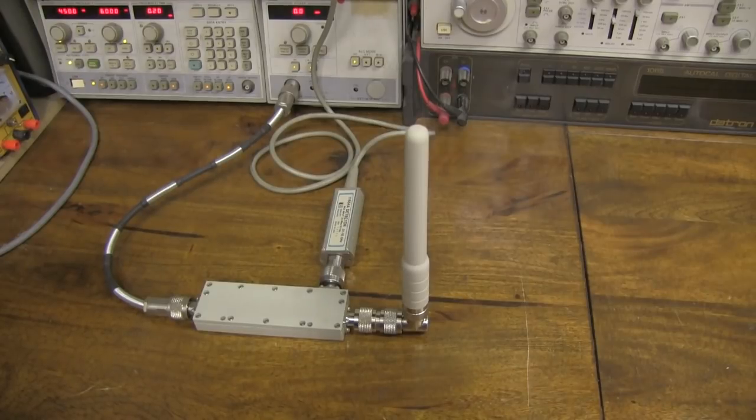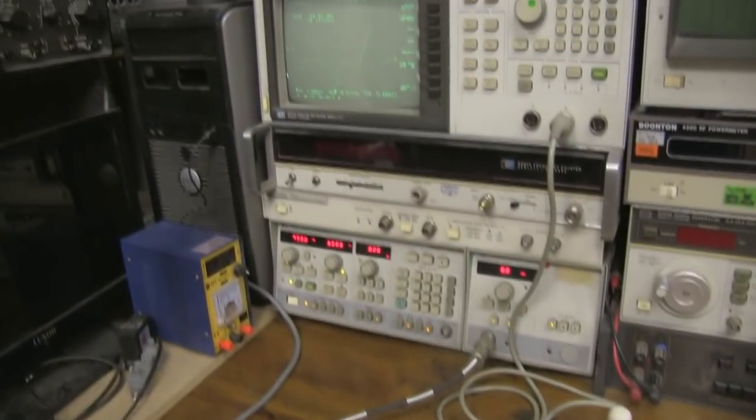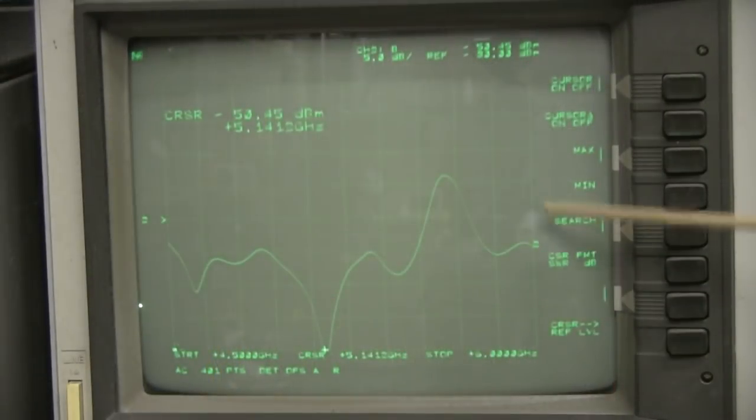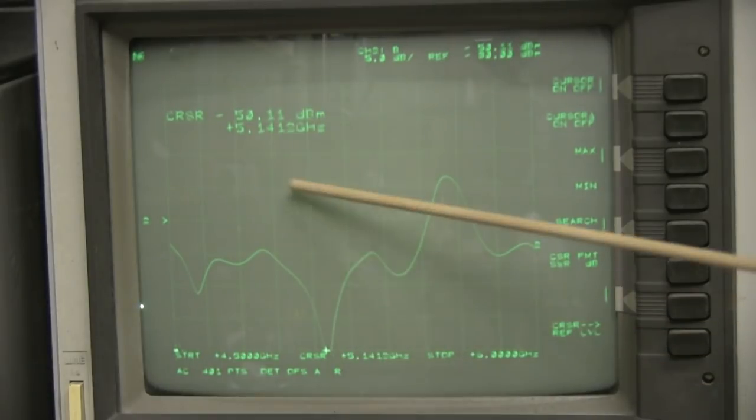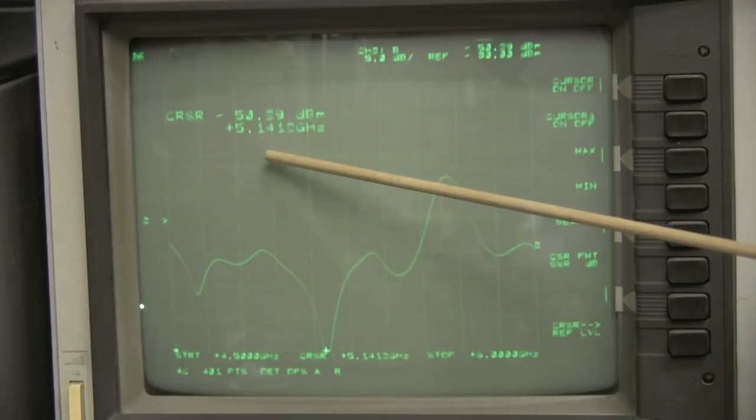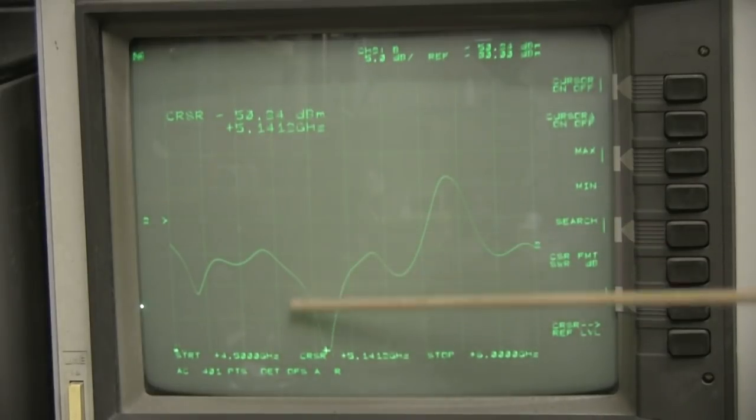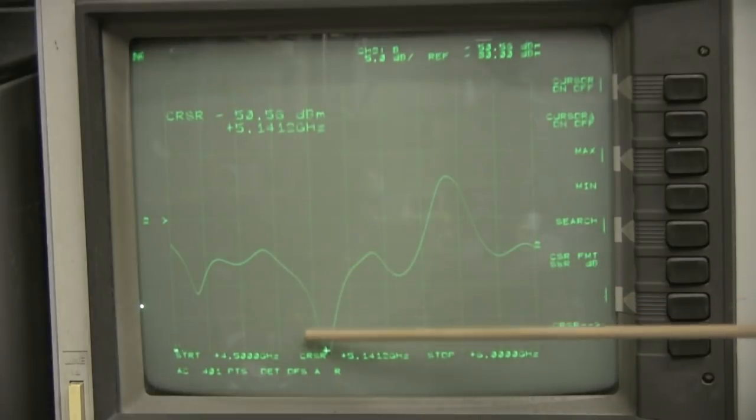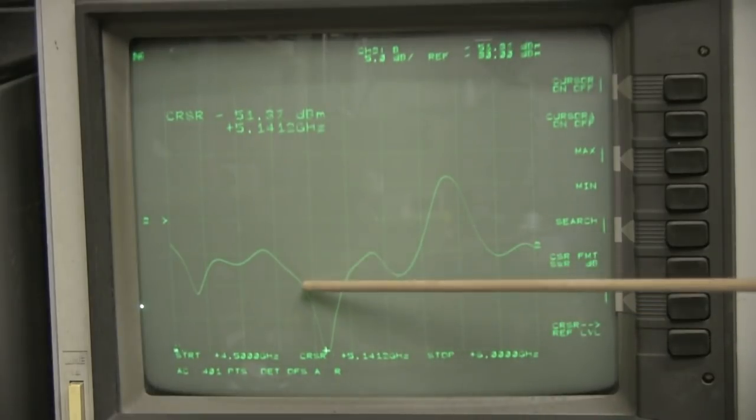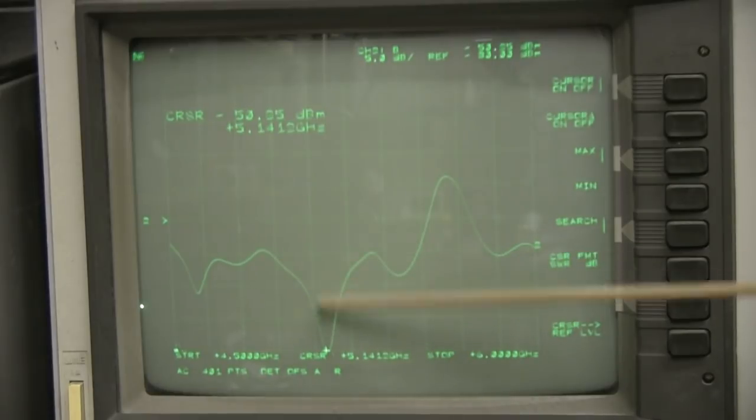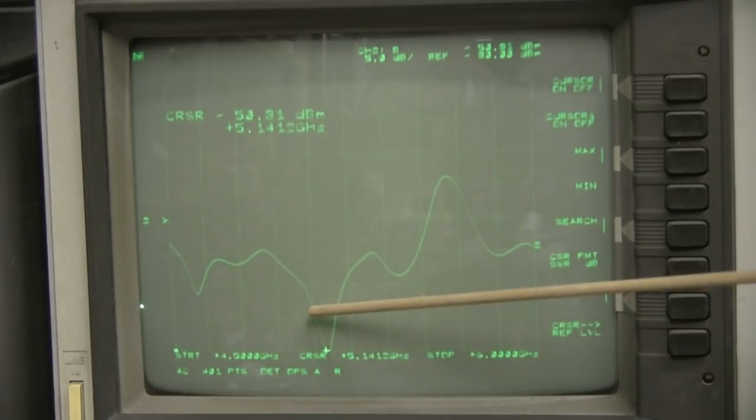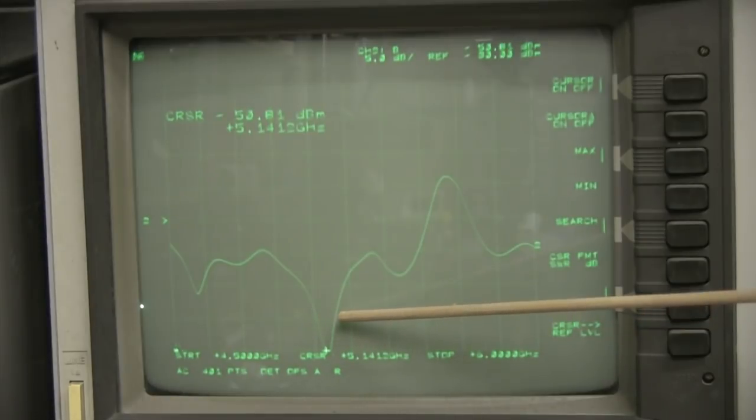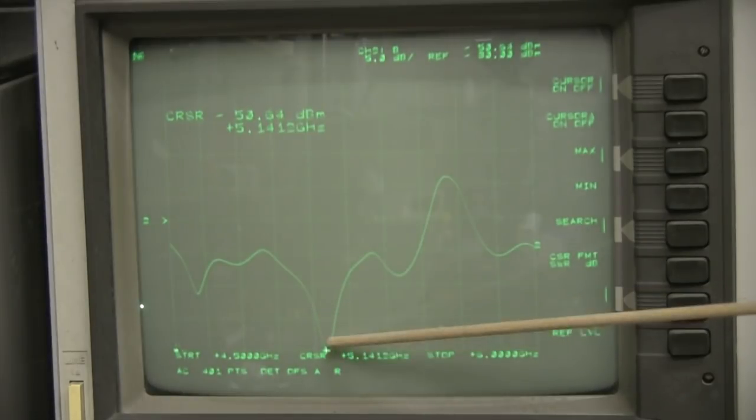This is the output on the network analyzer. Here we've got the cursor centered on the lowest point which is 5.1 gigahertz. Although we call 5 gigahertz Wi-Fi 5 gigahertz, it actually works over quite a broad range and most routers are set up to work quite close to 5.1 gigahertz. We can see we've got this beautiful response here and it is wide enough to work at 5 gigahertz and probably just almost up to 5.2 gigahertz in this dip here.